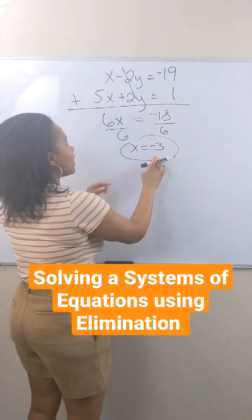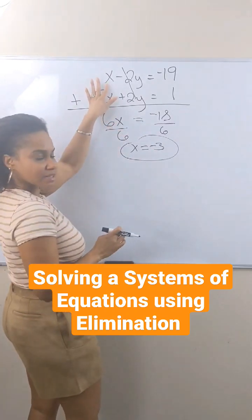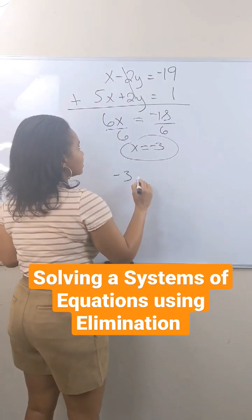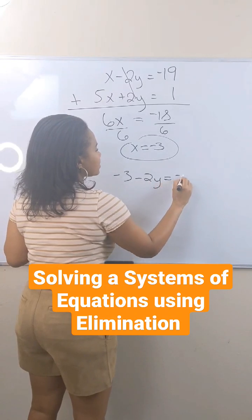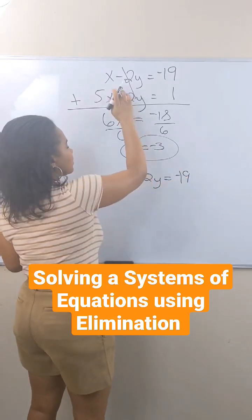So of course I have to find y. I take my x value and plug it back into one of my original equations. So instead of putting x, I'm putting negative 3.